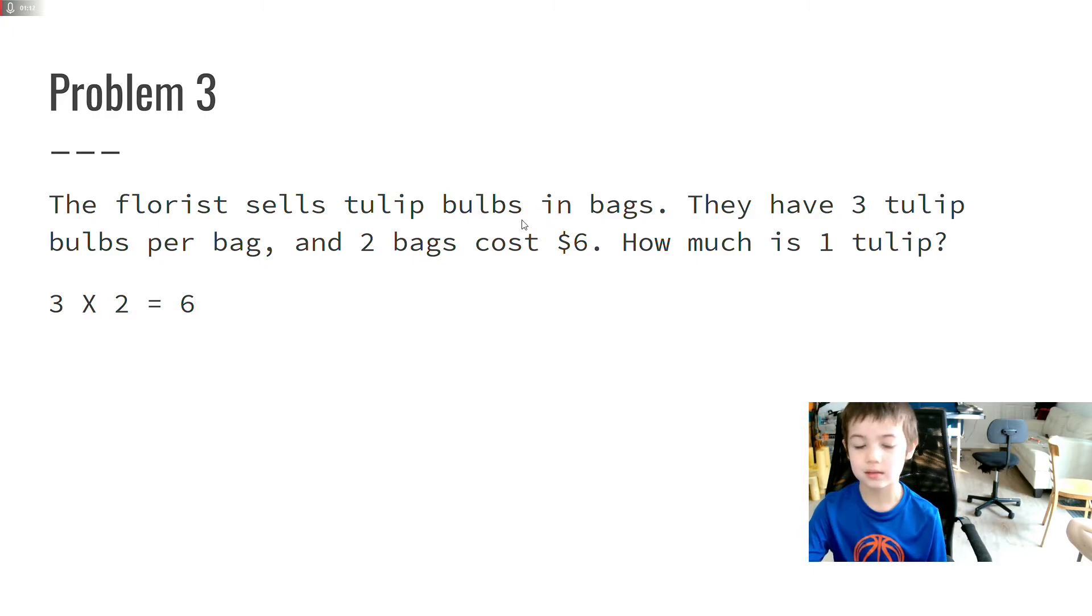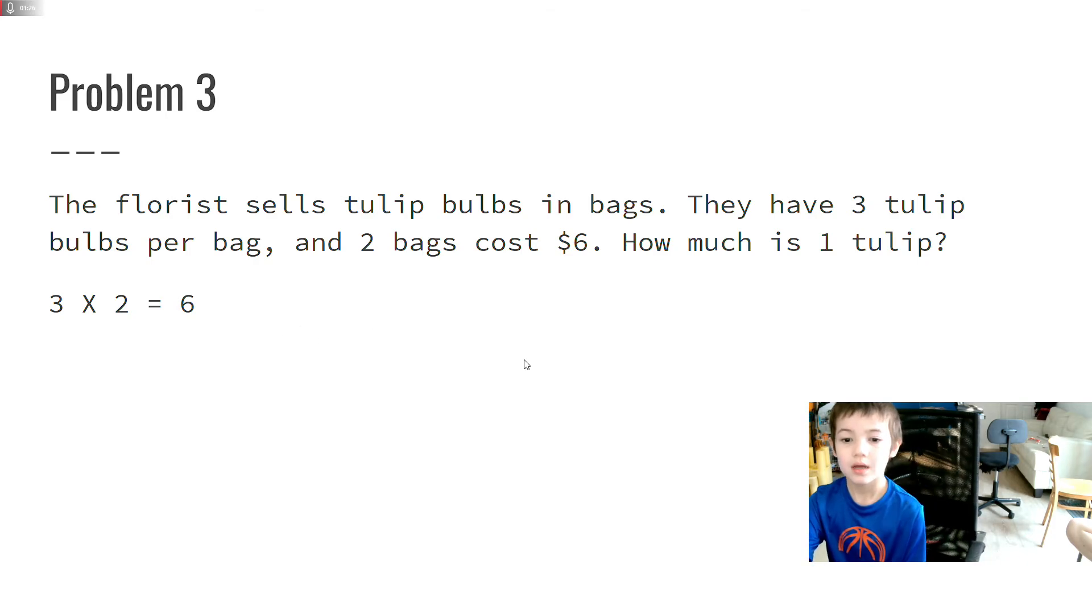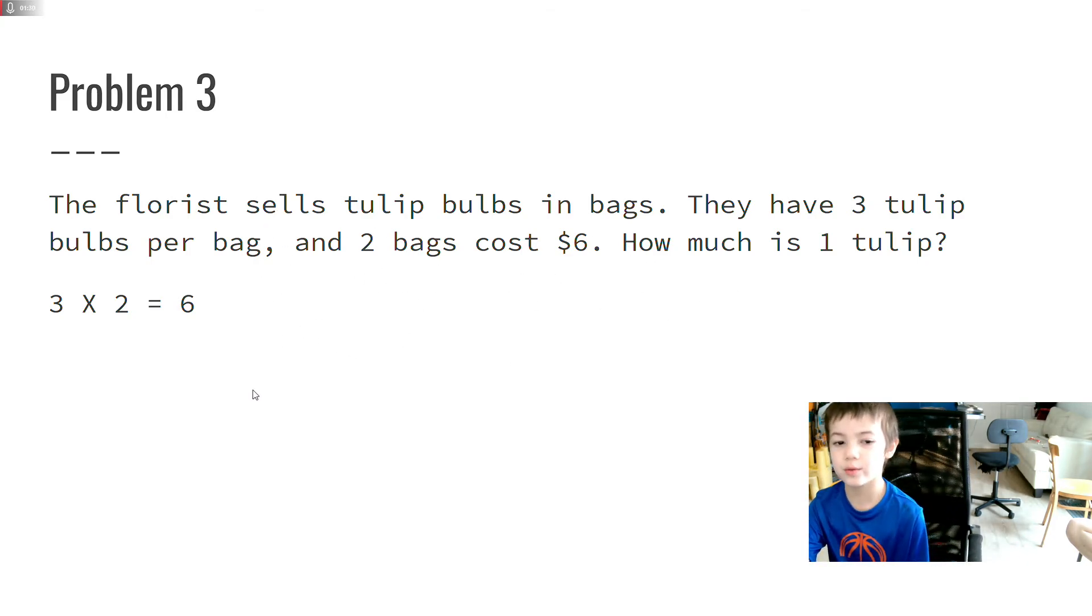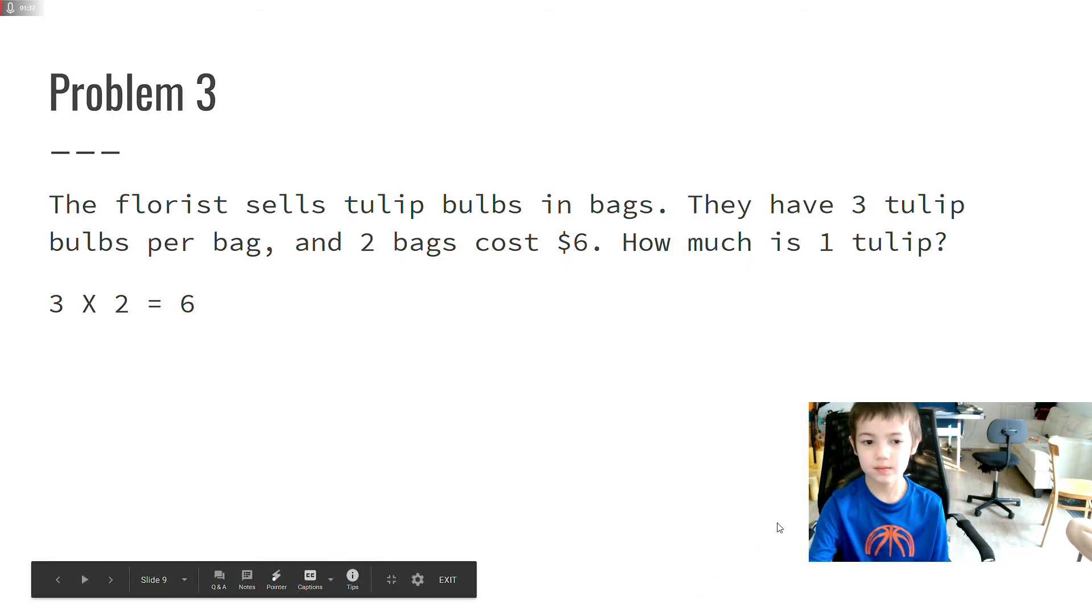So 2 bags cost $6. You want to do 3 times 2 because there are 2 bags and each one has 3 tulips. That will give us how many tulips for 2 bags, and that equals 6.